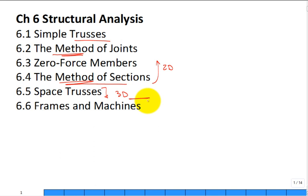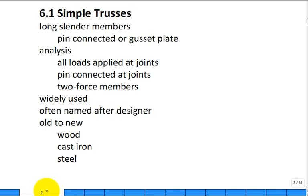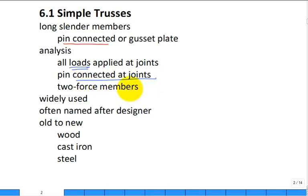Those two methods are used for 2D trusses, but everything is really in 3D, so we also get to space trusses. Today I think we'll get through space trusses. A truss is made up of long slender members that are linked together — sometimes welded, sometimes pinned, sometimes with gusset plates or bolted together. We're going to treat and analyze it as if those long slender members are pin-connected — that's an approximation.